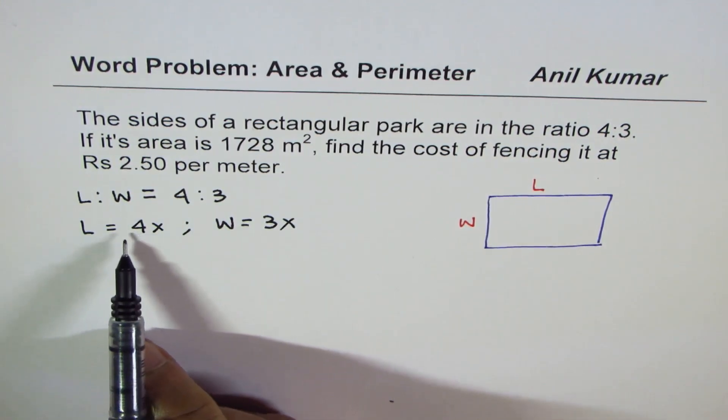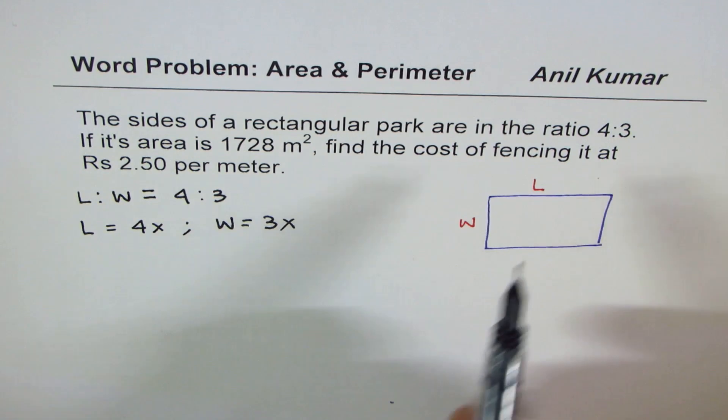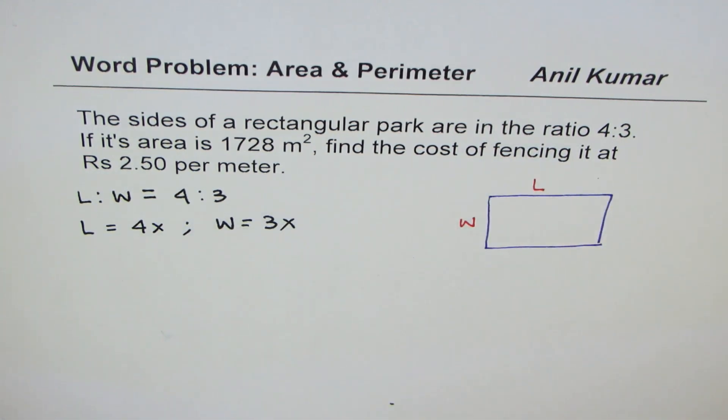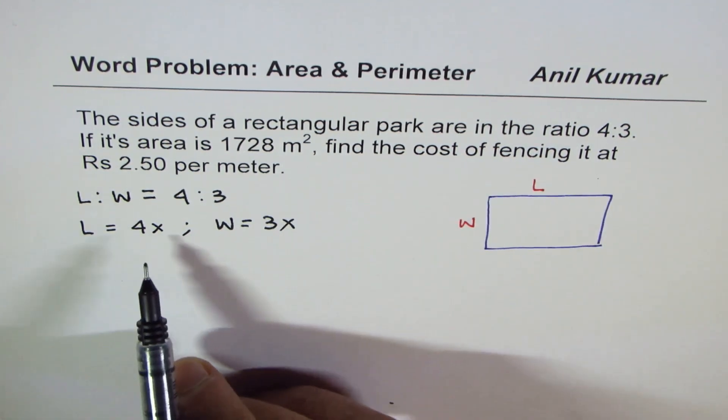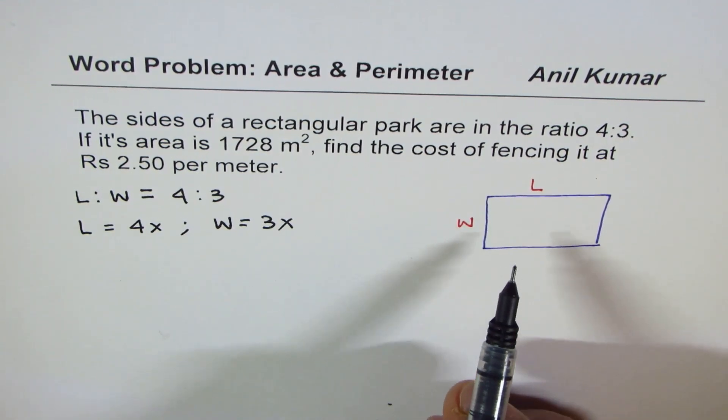That really means that if length is equal to 4x, then width is equal to 3x. Do you see that? So if I divide 4x by 3x, I will get the same ratio of 4 is to 3. So that actually is the key to solve such questions. Now let's move forward.